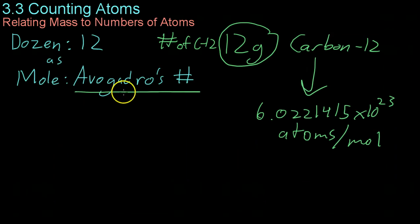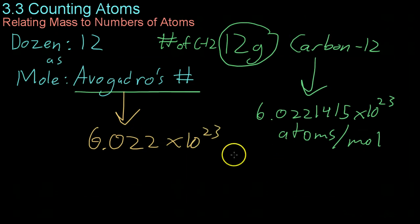And for most purposes in this class, we're going to simply abbreviate Avogadro's number to 6.022 times 10 to the 23rd things per mole.